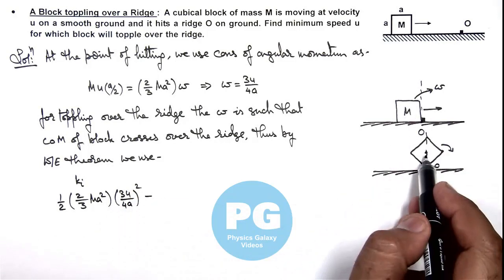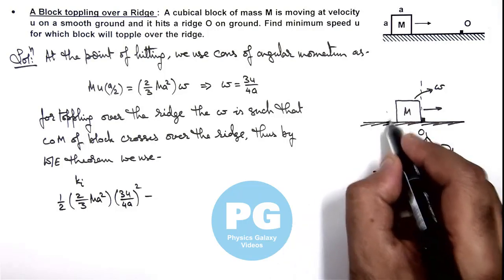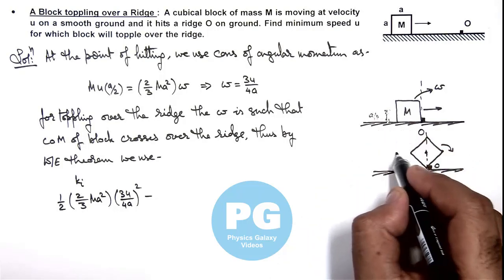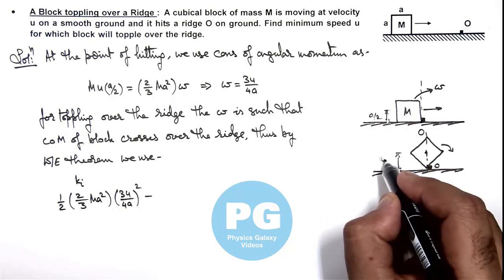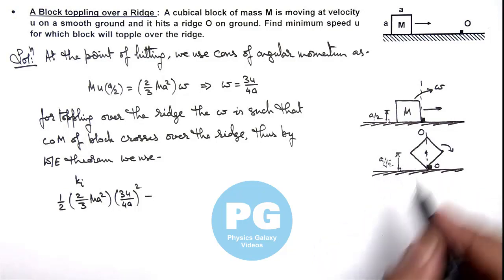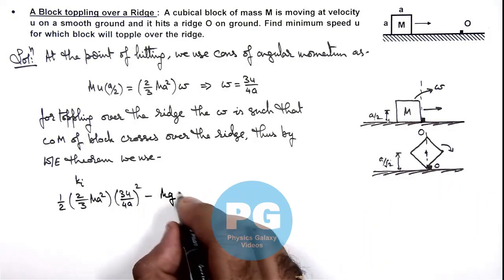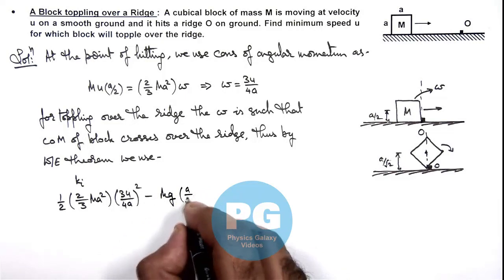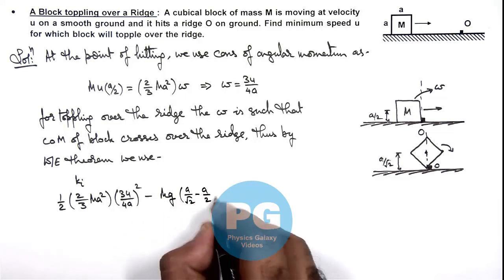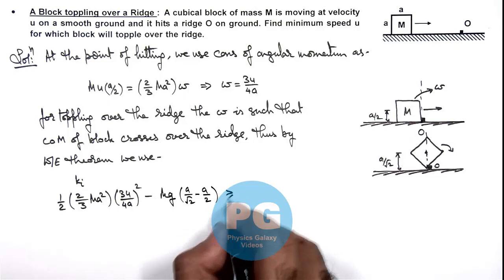The rise in center of mass, we can see initially its center of mass was at a height a/2, and in this final situation its center of mass is at a height a/√2. So the work done against gravity is Mg multiplied by (a/√2 - a/2) should be greater than or equal to zero.